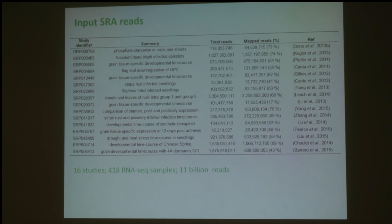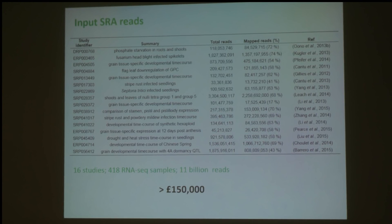For the wheat expression browser, we used 16 different RNA-seq studies, which were all publicly available. This included over 400 RNA-seq samples and in total about 11 billion reads. We calculated that the sequencing alone cost over £150,000, so hopefully this will prove a useful resource and it's a good way to reuse data that's already available.